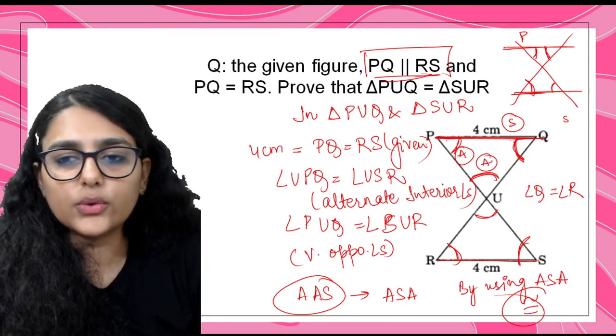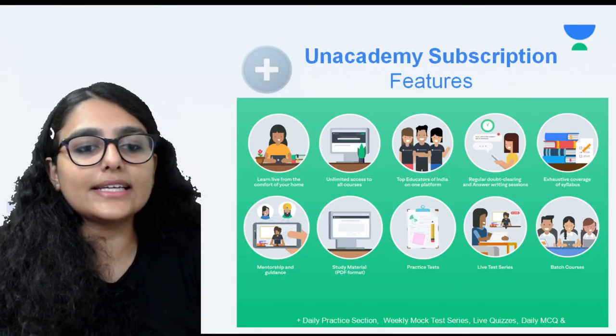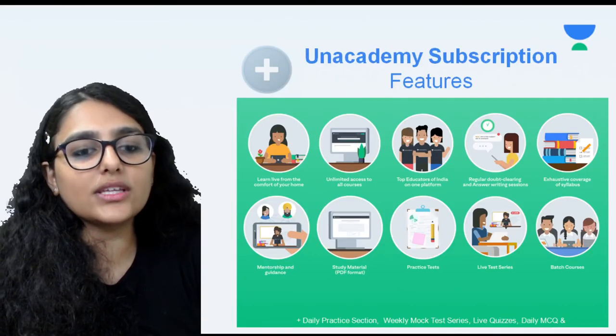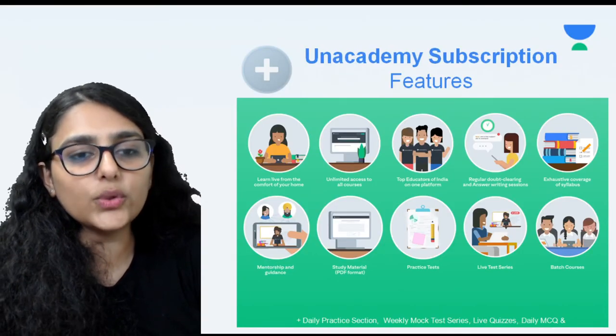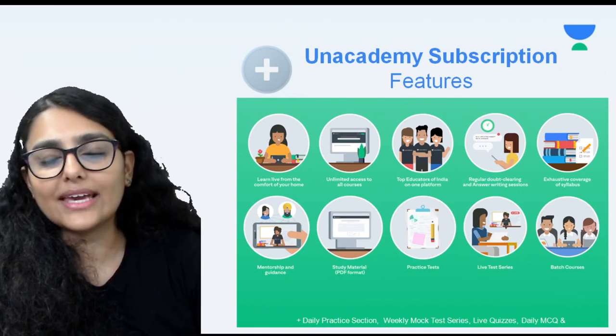That's all in the chapter. You need to remember all the criteria and know how to apply them to different questions. Don't just see 90 degrees and directly apply RHS - also check whether the hypotenuse and side are equal.